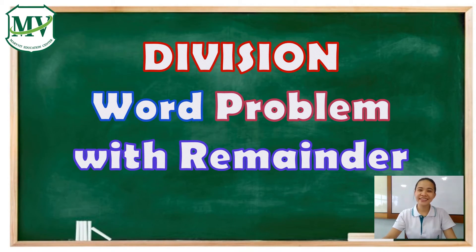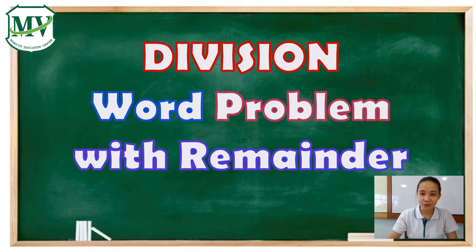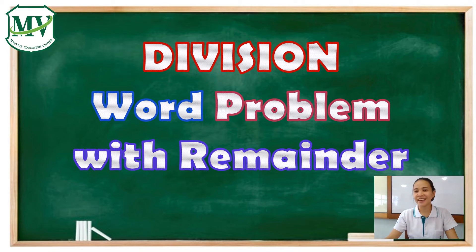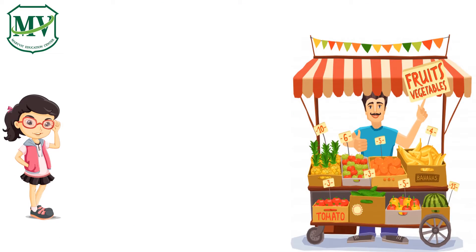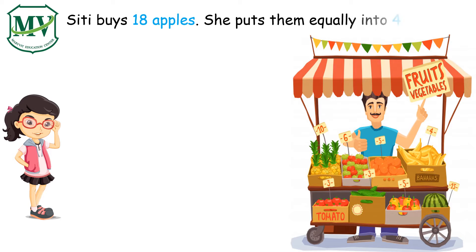Hello kids, this is Teacher Love. Today you will learn about division word problems with remainder. I hope you will listen and enjoy this topic. Our word problem is: City buys 18 apples and she puts them equally into four baskets.